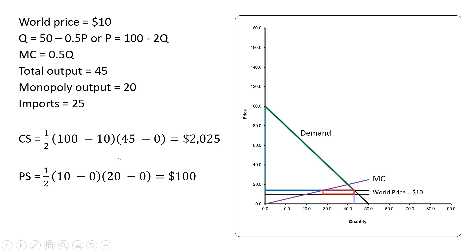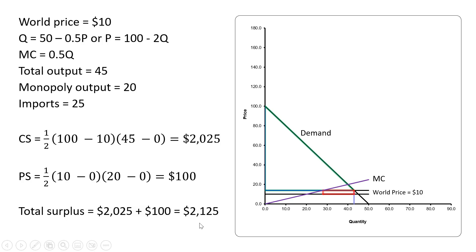In terms of consumer surplus and producer surplus: consumer surplus is the large triangle between the height of the demand curve and the world price, up to the 45th unit. Using one-half base times height, we get consumer surplus of $2,025. Producer surplus is the triangle between the world price of $10 and the marginal cost curve up to the 20th unit, giving producer surplus of $100 and total surplus of $2,125.